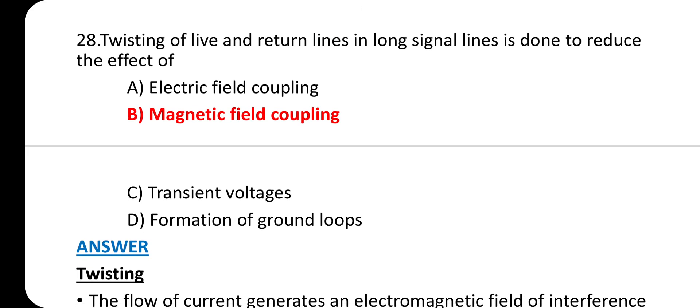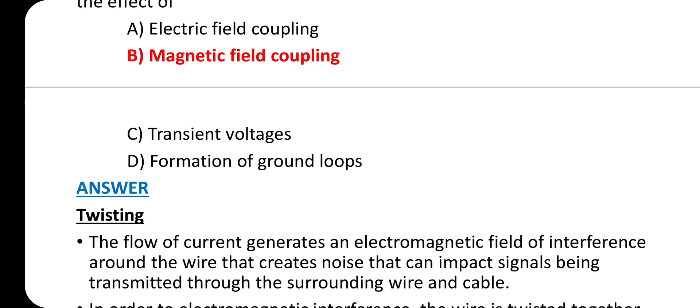Question 28: Substitution of live and return lines in long signal line is done to reduce the effect of option B: magnetic field coupling.